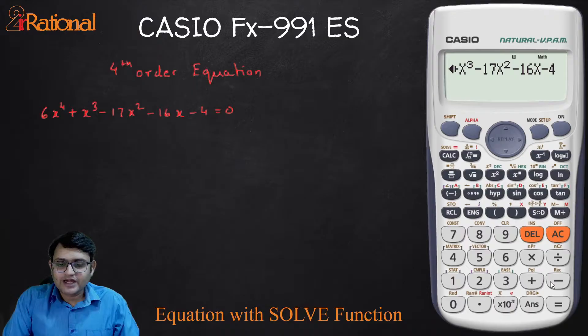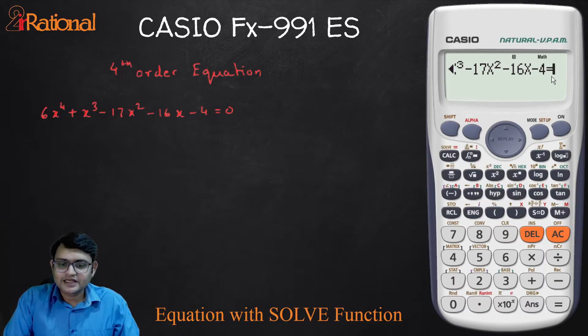Now I need this equal to 0. Now I need this equal to sign. For that I am not going to press this equal to down here, but you can see besides solve, I have an equal to sign in red. So for that, I will press alpha and then the CALC button and I will get an equal to. I want equal to 0.